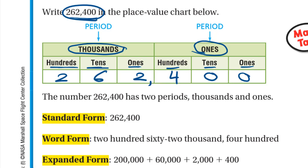After the 2 in the thousands period, we put a comma. The number 262,400 has two periods: thousands and ones. Remember, the ones period has ones, tens, and hundreds, and the thousands period has thousands, ten thousands, and hundred thousands. The standard form is the number written in digits.